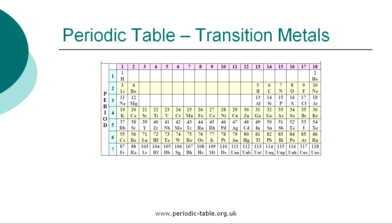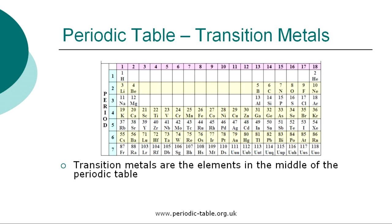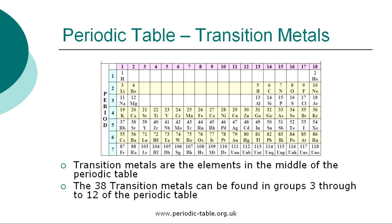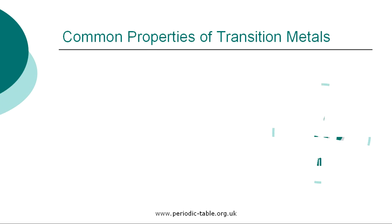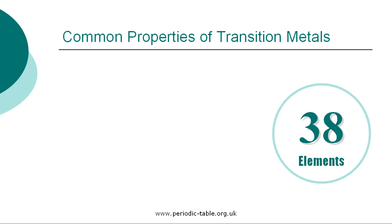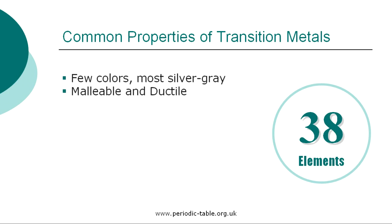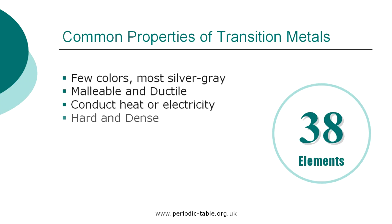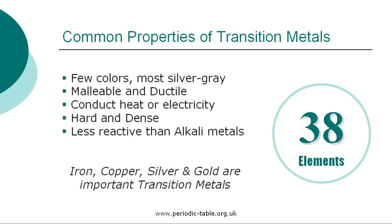The 38 elements classified as transition metals are found in the middle of the periodic table in groups three through twelve. Only a few of the transition metals are colored — most of them are silver gray or silver bluish. As with all metals, the transition elements are ductile and malleable and good conductors of electricity and heat. They are generally hard and dense and less reactive than the alkali metals. Iron, copper, silver, and gold are important transition metals.